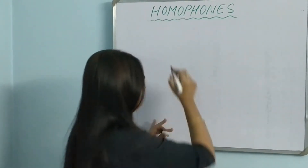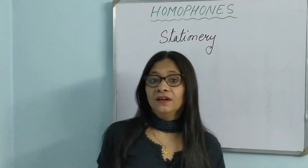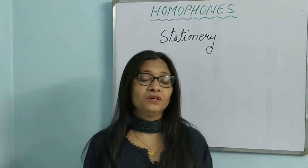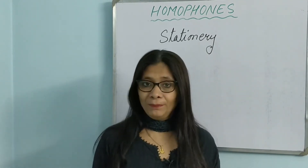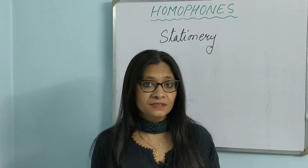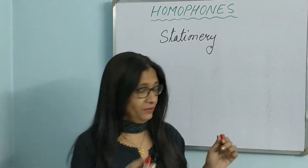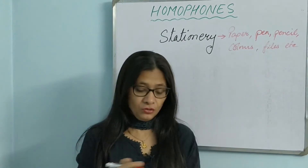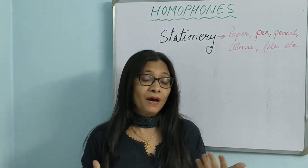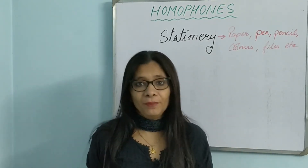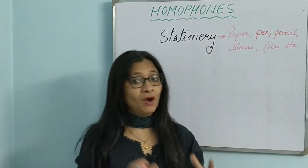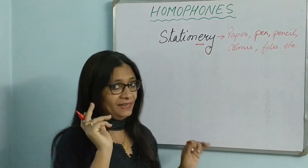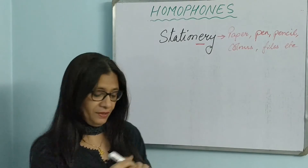The first word I want to draw your focus on is 'stationary' — S-T-A-T-I-O-N-A-R-Y — with an E. Stationary items are all those items used in an office or for school work: paper, pen, stapler, ruler, colors, files. These things are known as stationery. For example: 'If you happen to pass by a stationery shop, please get me a chart paper.'